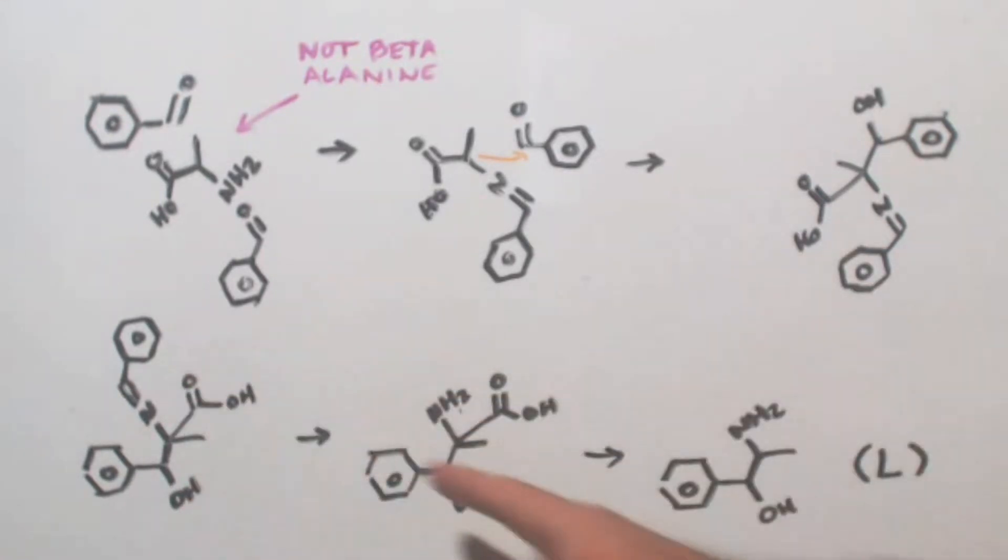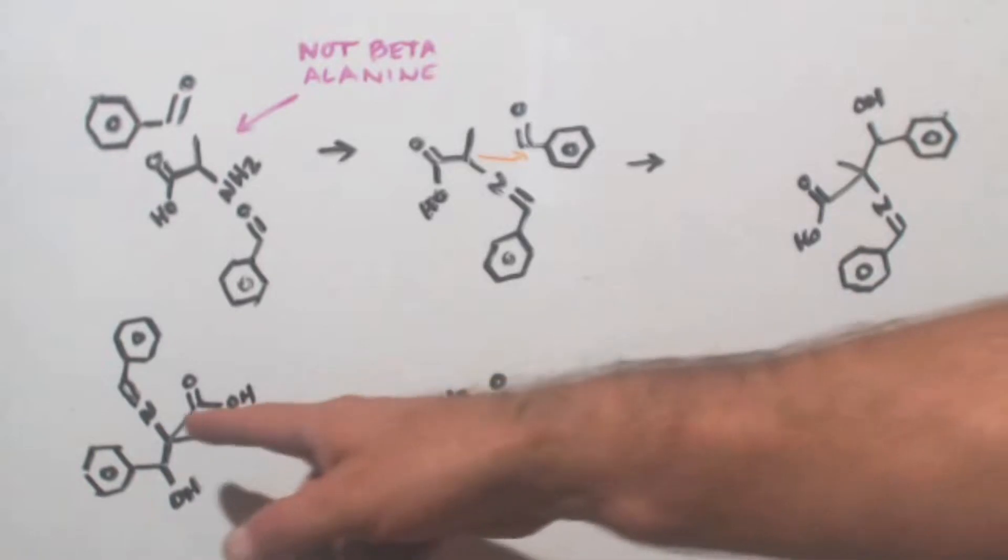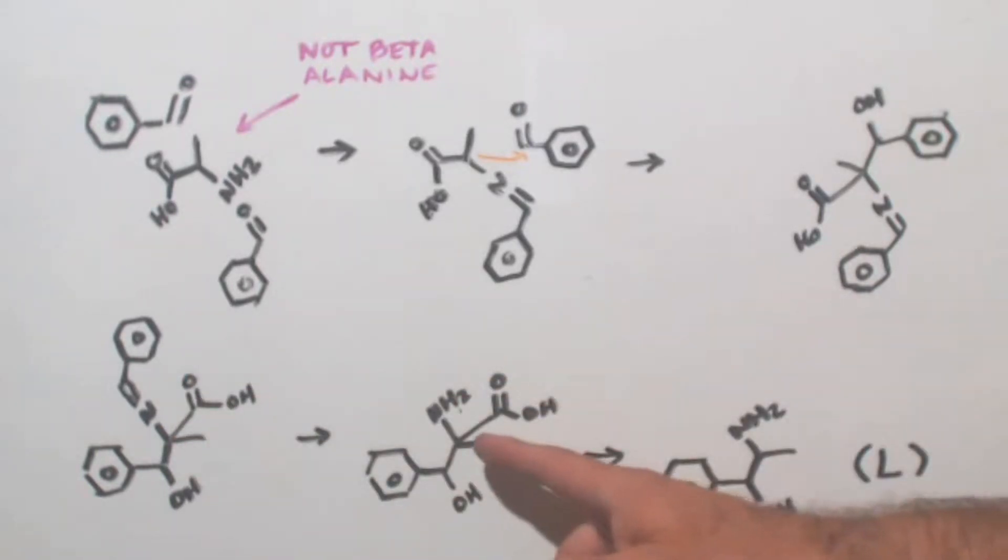After that the imine pops off and becomes an amine right. So now you're really getting close to your end product. This decarboxylates and comes off as CO2 right and now you're left with this.